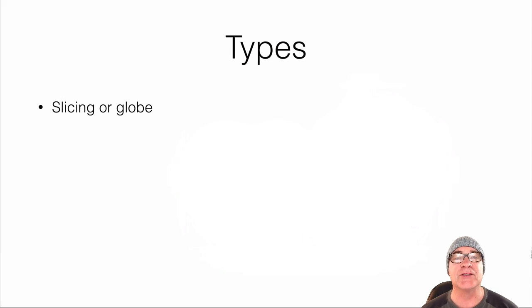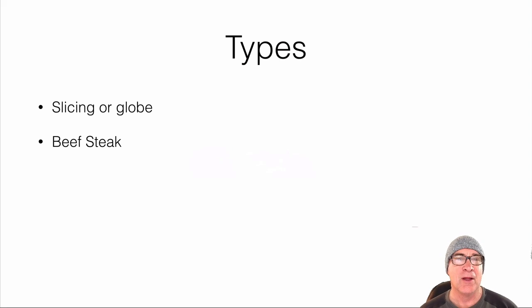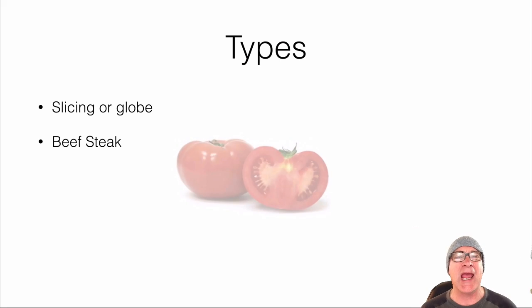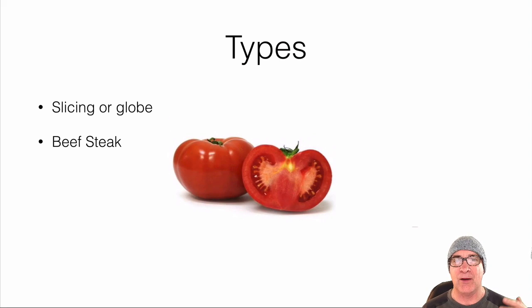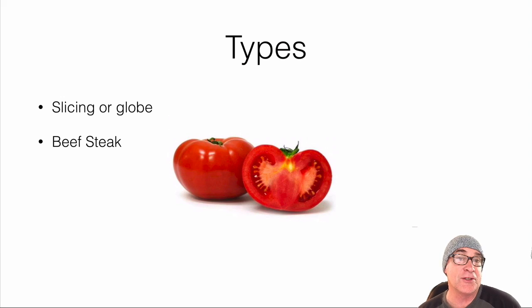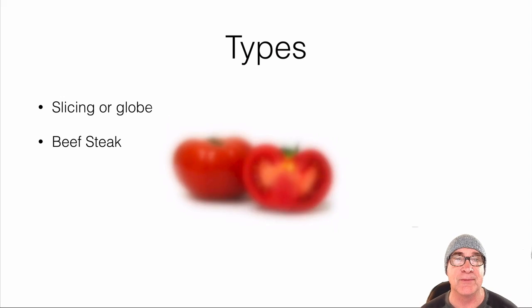The second type is beefsteak tomatoes. They are much larger, more rectangular than anything else, and they're used for slicing — for instance in sandwiches.